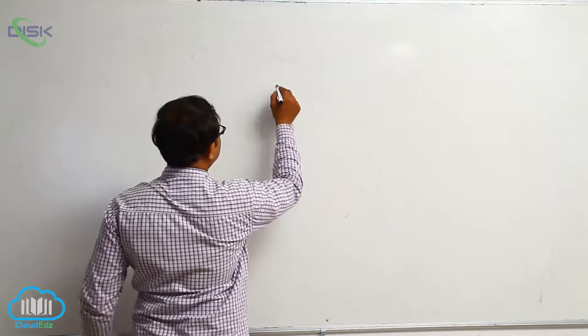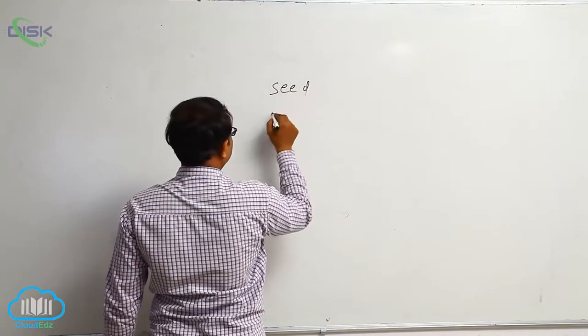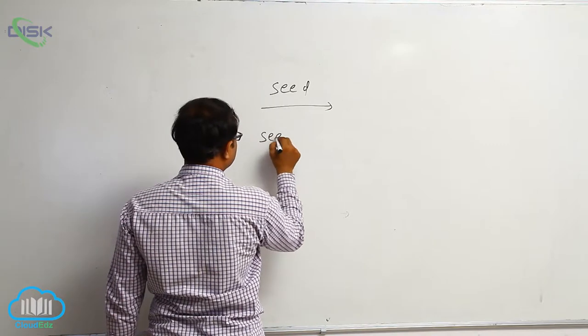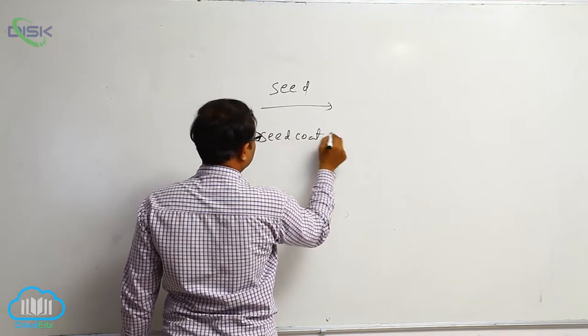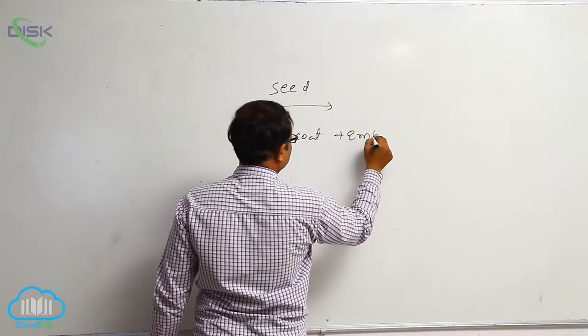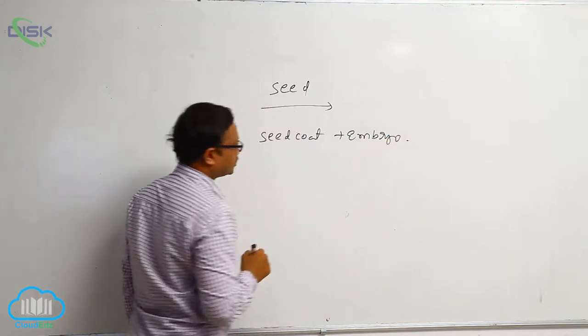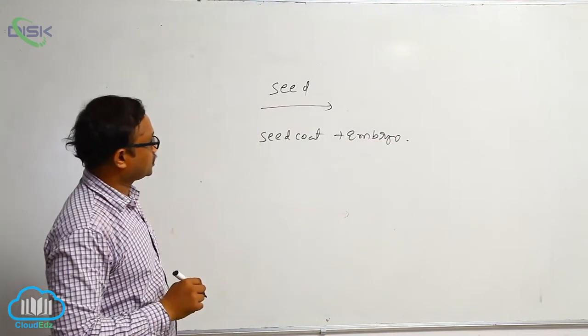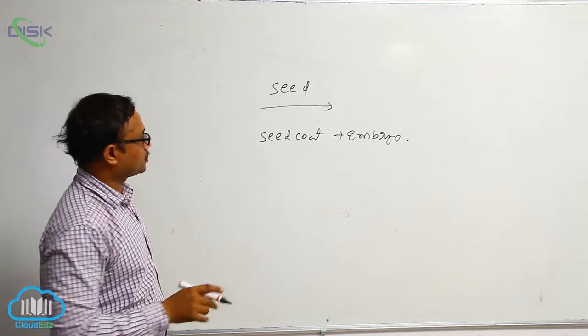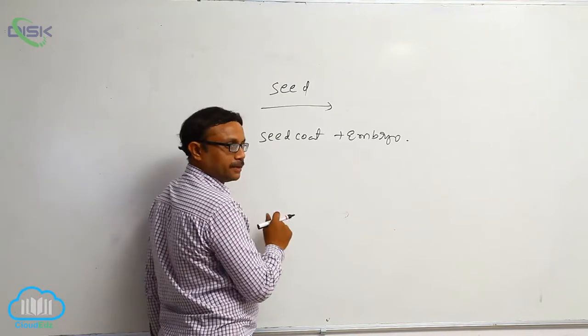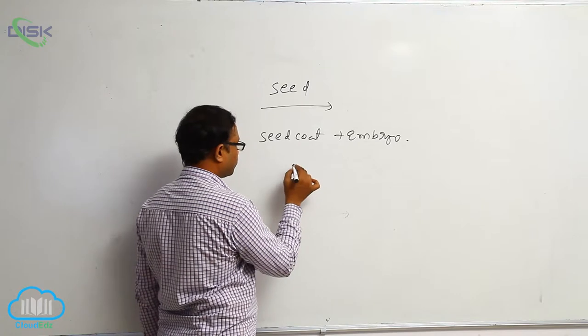After the fruit, seed. Seed having mainly seed coat plus embryo. That is known as the seed. Seed having mainly two parts: seed coat plus embryo. I already explained this before to you at the time of seed germination.